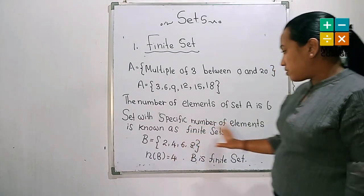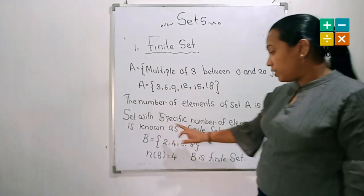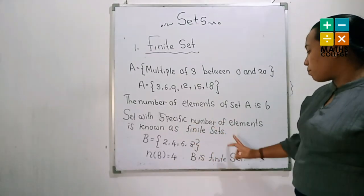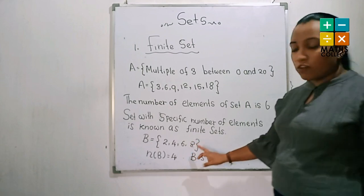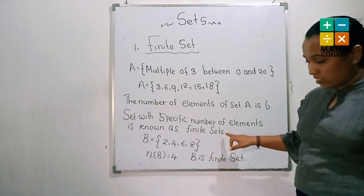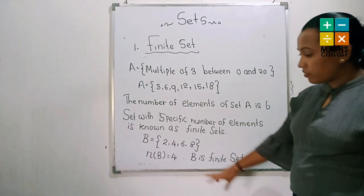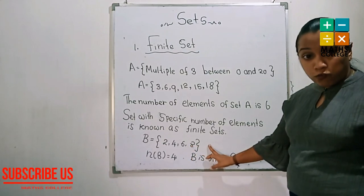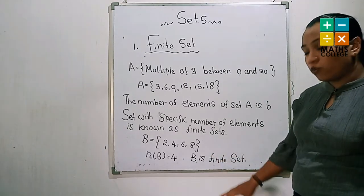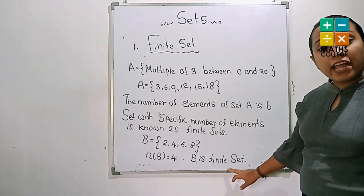A set with a specific number of elements is known as a finite set. The number of elements is 6 — specific number of elements, this is the key point. Considering another example: set B equals {2, 4, 6}. N(B) equals 3, so there are 3 elements. The elements can be counted. Therefore, B is a finite set.